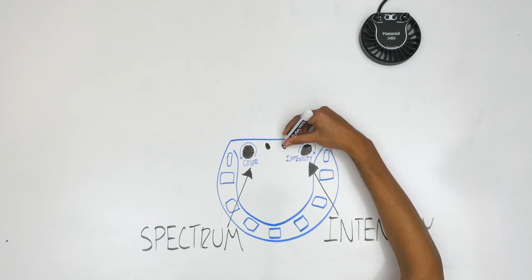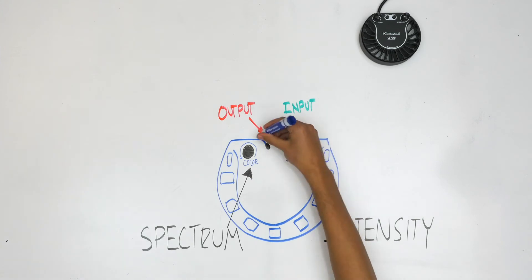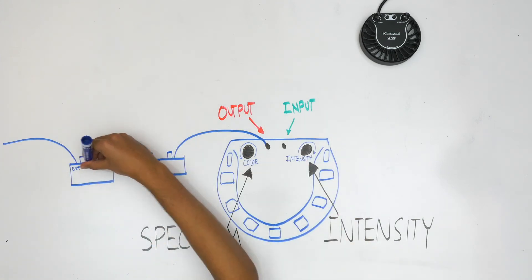The control interface has two external control ports, an input and an output, which you can use to link two or more Kessel lights together for more expansive coverage.